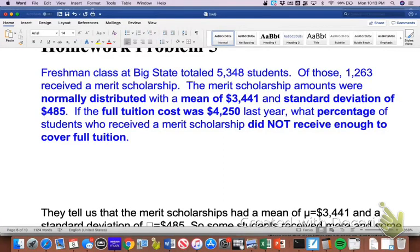Problem number five is going to have Excel do a lot of the hard work for us. It's saying the freshman class at a university got scholarships that was normally distributed.